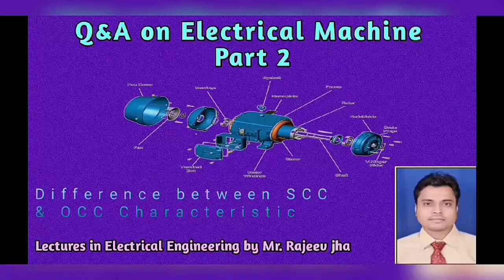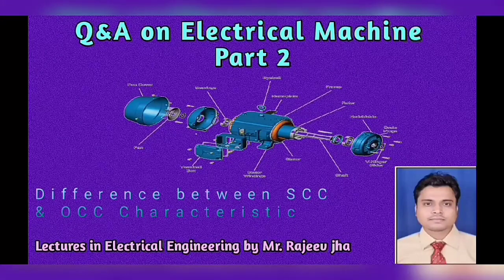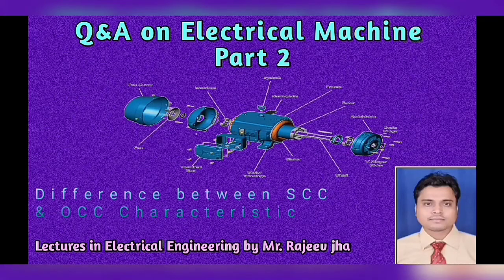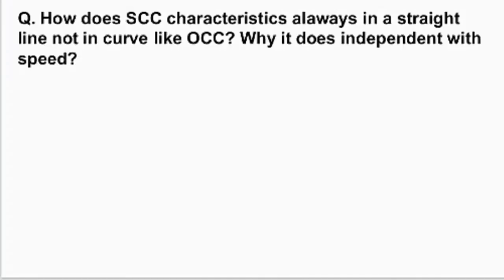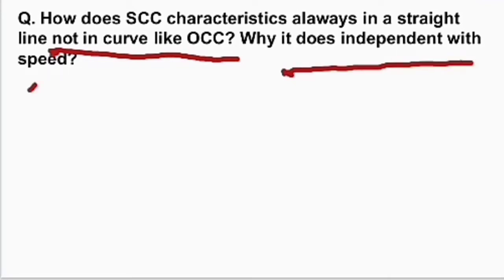Hello friends, I am Rajiv Jha, and in this video I come with a new conceptual question based on the difference between SCC and OCC characteristics. I hope you will like and enjoy this video. The question is: how does SCC characteristics always remain a straight line, not a curve like OCC, and why is it independent with speed? There are two questions here.